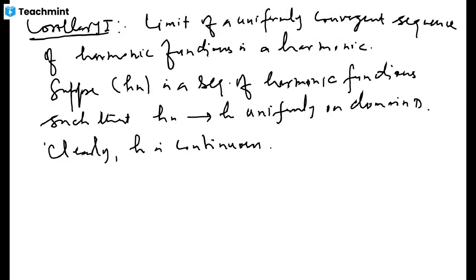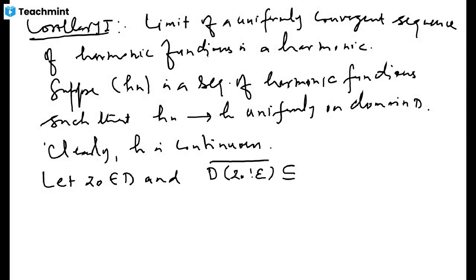Our claim is to establish that h is harmonic. To show h is harmonic, I apply the theorem we just proved: I need to show h satisfies the mean value property. To show this, choose an arbitrary point z₀ in D. Since D is open, we can find a disk along with its closure about center z₀ contained in domain D.